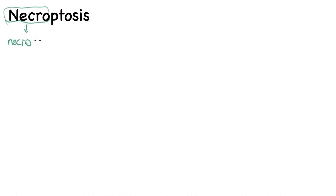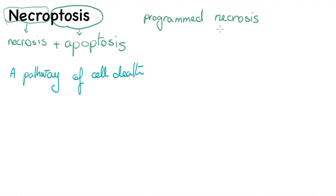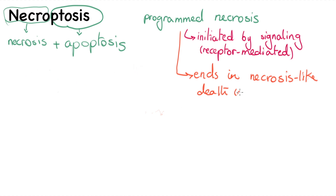Necroptosis, as the name tells you, is a combination of necrosis and apoptosis. It is yet another way of cell death, also referred to as programmed necrosis, because it is initiated by signaling kind of like apoptosis — like the receptor-mediated type of apoptosis — but yet it ends in a necrosis-like death.